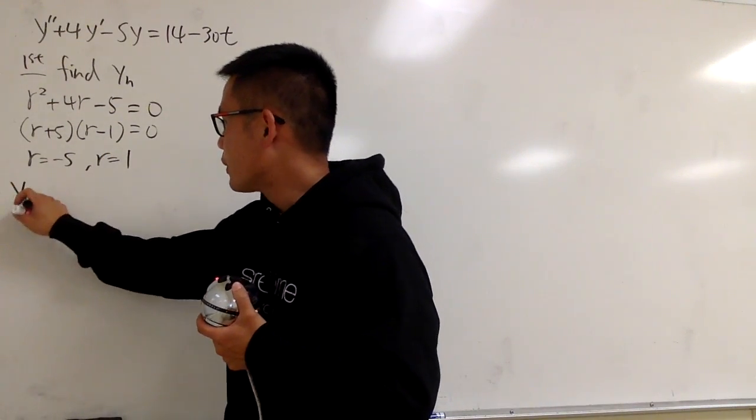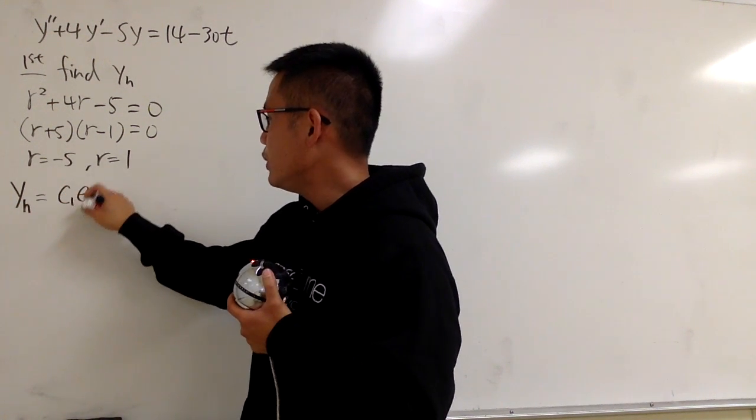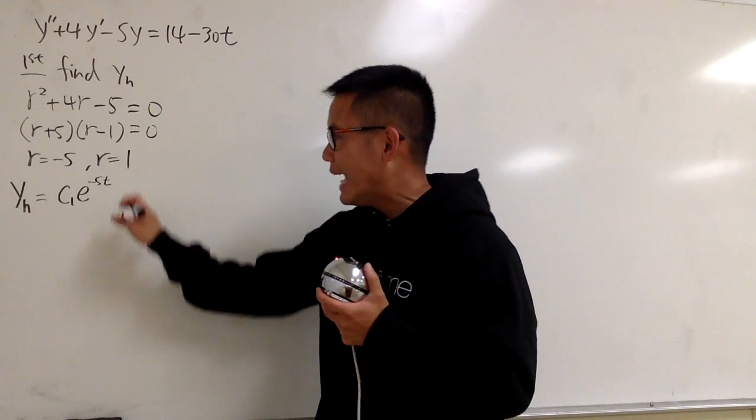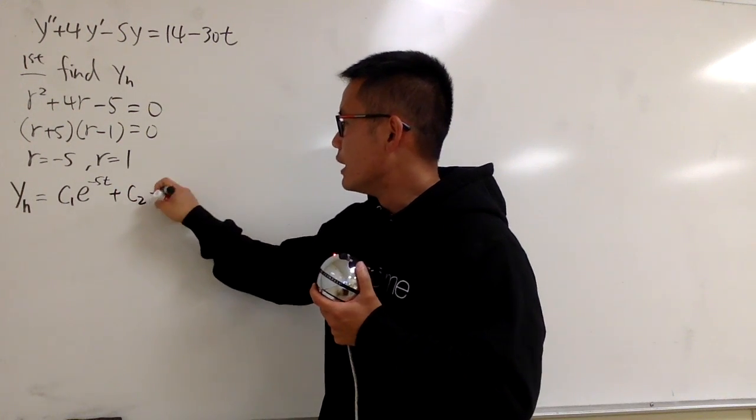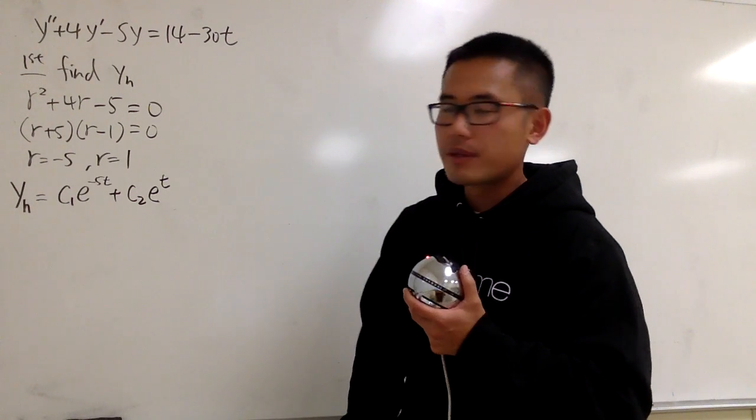Well, yh, in our case, we know, let me put this down as the first one, which is c1 e to the negative 5t, and then we will add it with c2 e to the 1t, which is just t, like that, and that's yh.